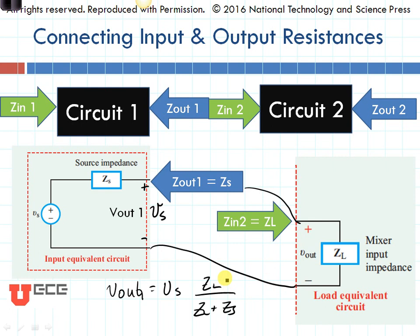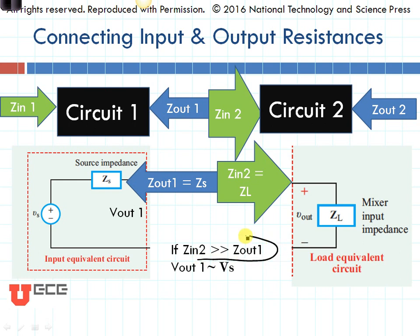Now if Zl is small compared to Zs, we're not going to get the voltage that we wanted at all. The only time that we're going to get the voltage that we wanted to be driving it with is if Zl is very large compared to Zs. So Zl much greater than Zs will give us the result that Vout1 is equal to Vs. So this is a really important feature. When we are designing circuits, if the input resistance of the second circuit is very large — Zin2 is much greater than Zout1 — then we can consider these two circuits to be independent. We can design them separately. Any other case we'd have to analyze the entire circuit together. So we like it very much if the input impedance of a circuit is very high.